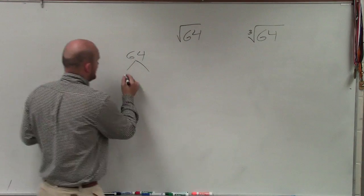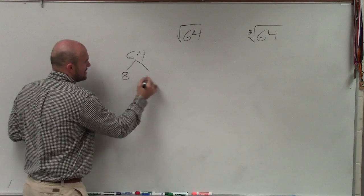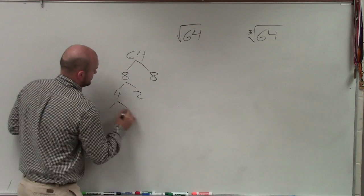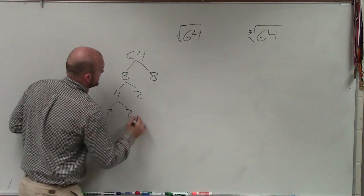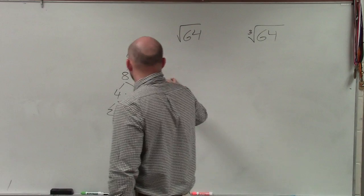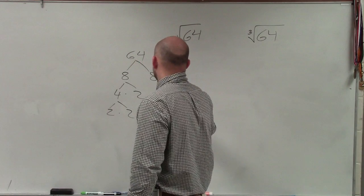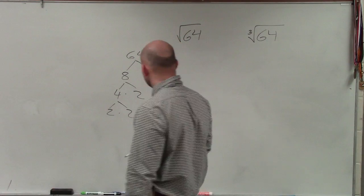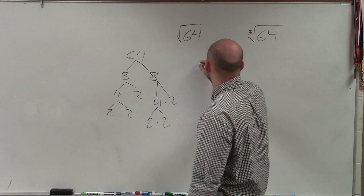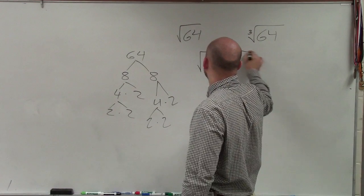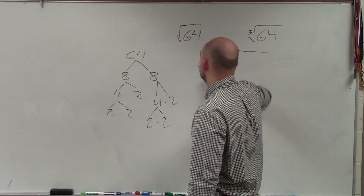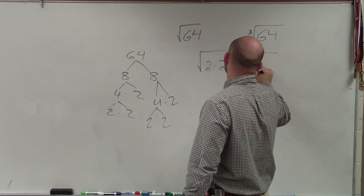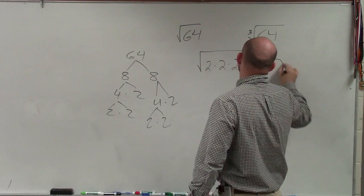So I can break that down into 8 times 8, then 4 times 2, 2 times 2, and again 4 times 2, 2 times 2. So therefore, the prime factorization of 64 is 2 times 2, times 2, times 2, times 2, times 2.